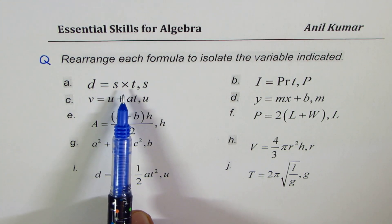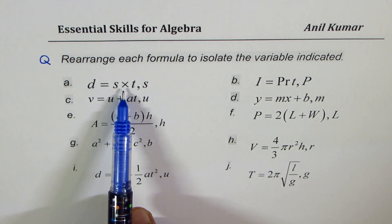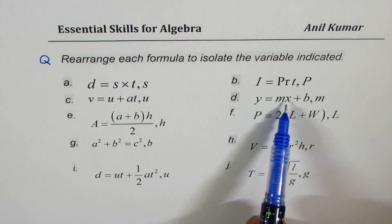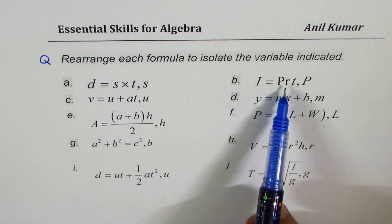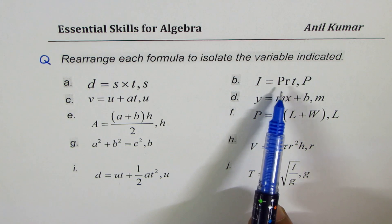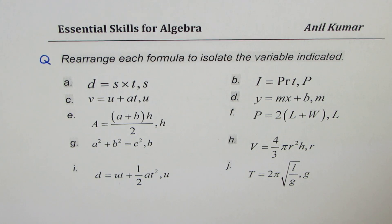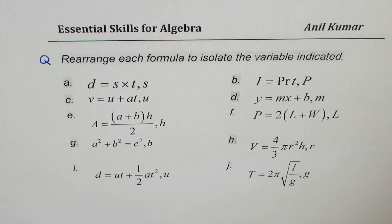Only in this example for multiplication have I written that sign, but normally we don't write it. So if I write mx, it means both are multiplied. So prt means all three are multiplied — interest equals principal amount, rate of interest, and time. That's the standard formula; you need to isolate p. I hope the concept is clear. Let's begin to solve them one by one.